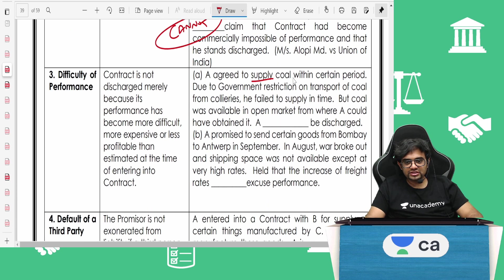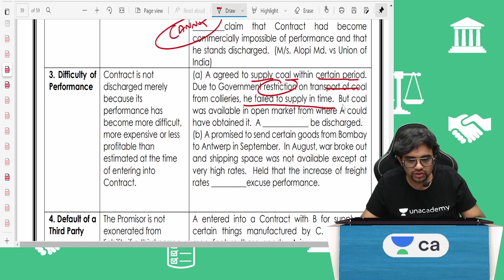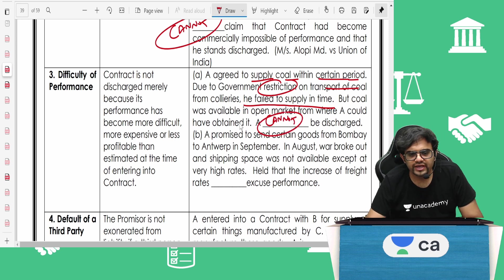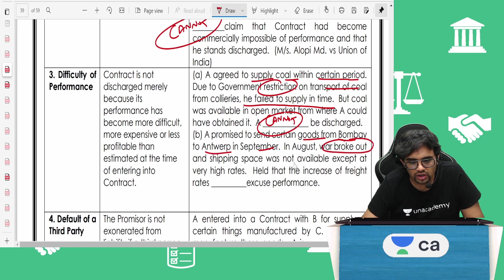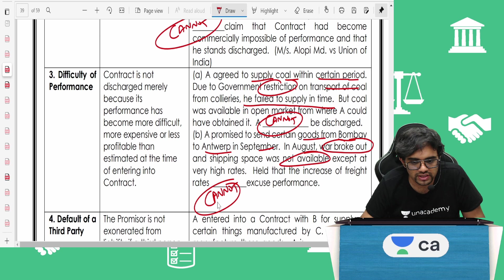Difficulty of performance. A agreed to supply coal within certain period. Due to government restriction on transport of coal, he failed to supply it in time. But coal was available in the open market from where A could have obtained it. Can you discharge the contract? No. A cannot be discharged. A promised to send certain goods from Bombay to Antwerp in September. In August war broke out and shipping was not available. Held the increase of freight rates cannot excuse performance. Nothing can be done.